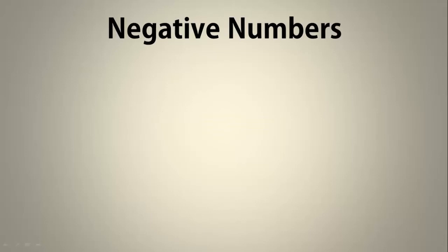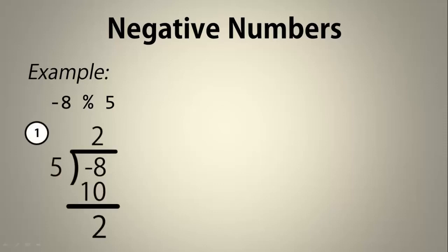You can also calculate a modulus that involves negative numbers, and you can use any of the techniques from before to do so. Here's an example. Find negative 8 modulo 5. In the long division method, I find that the remainder is 2, and so the answer is 2. Note that I set 2 as a number over here because I want my remainder to be less than 5 and greater than or equal to 0.